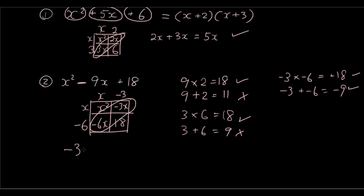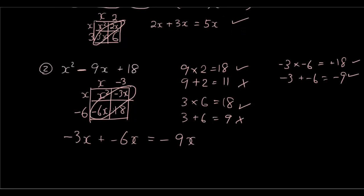So negative 3x plus negative 6x equals negative 9x. So therefore the answer is equal to bracket and the column headings and the row headings are x minus 3, x minus 6.